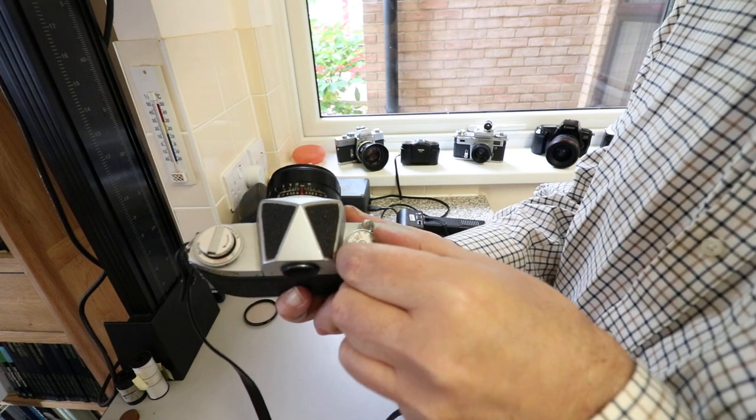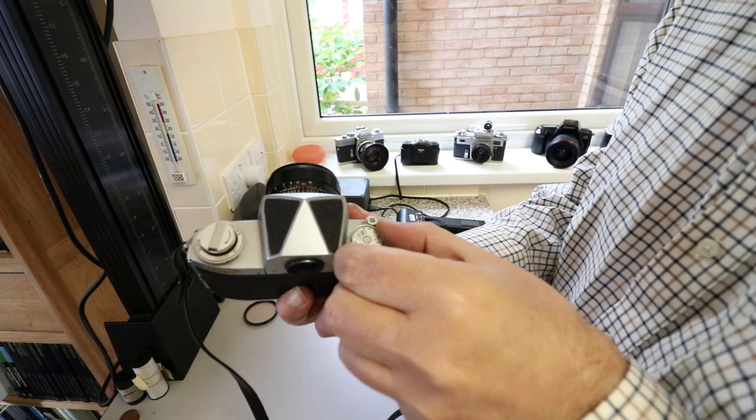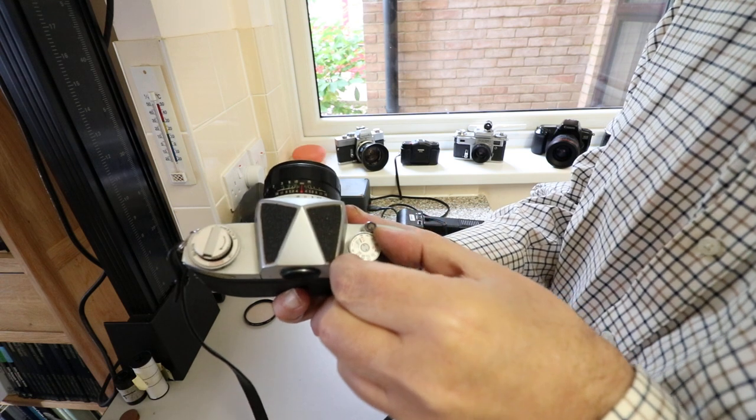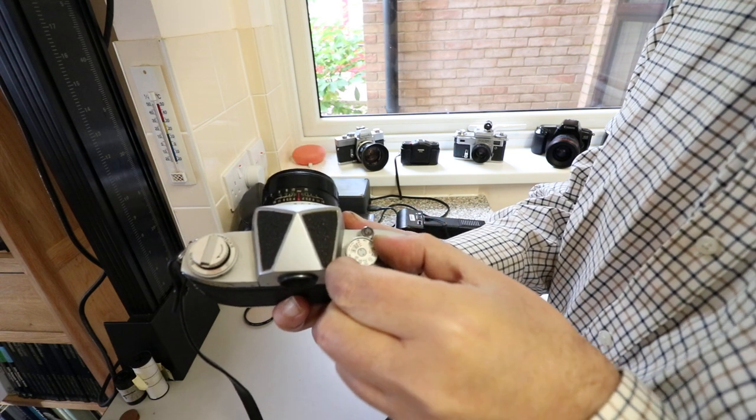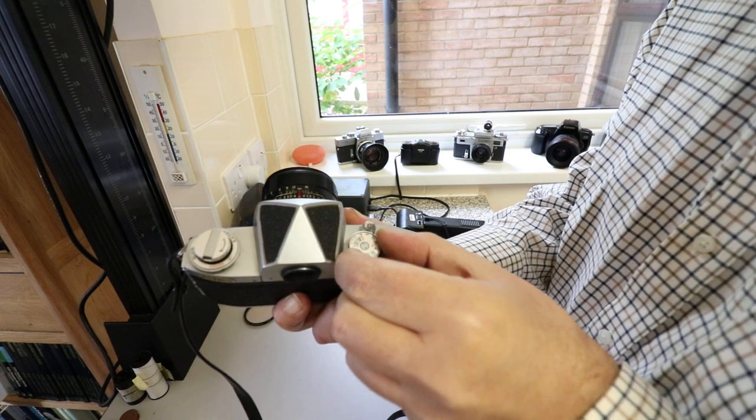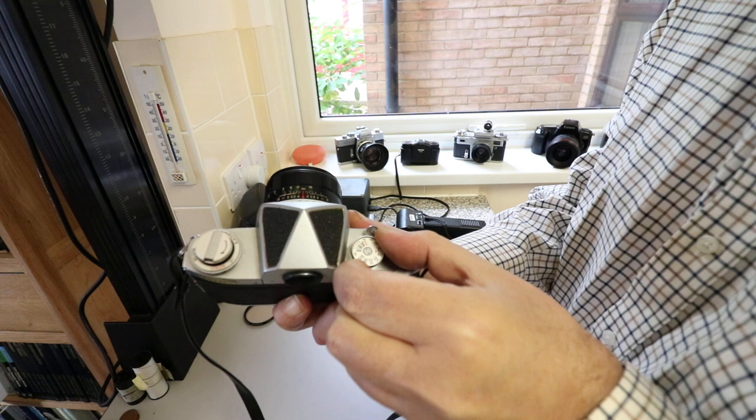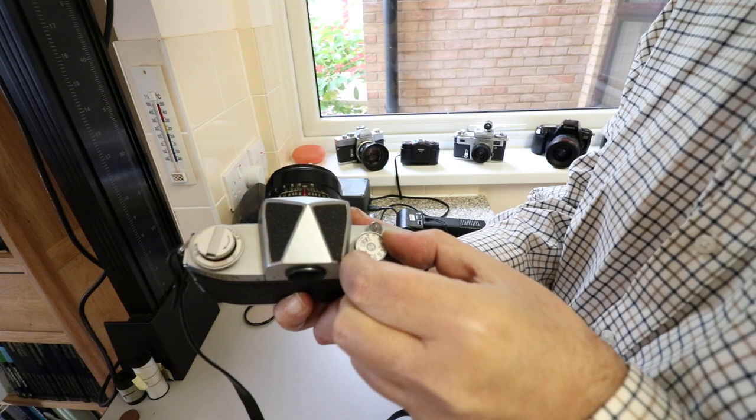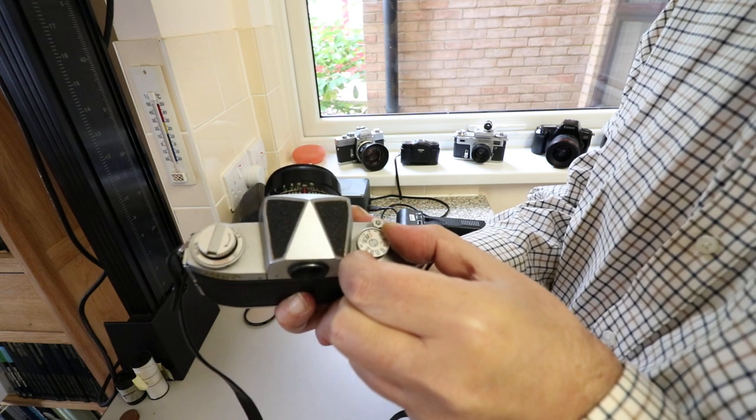The ASA or ISO goes from 1600 right down to 25. The Mark 2 version goes up to 3600. That's another way you can differentiate between the two models.